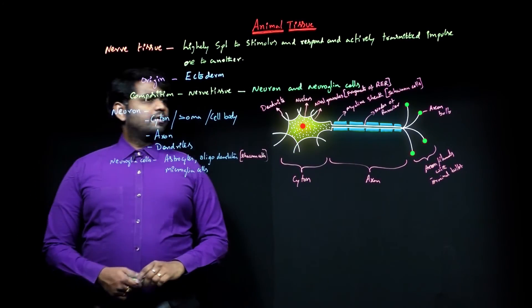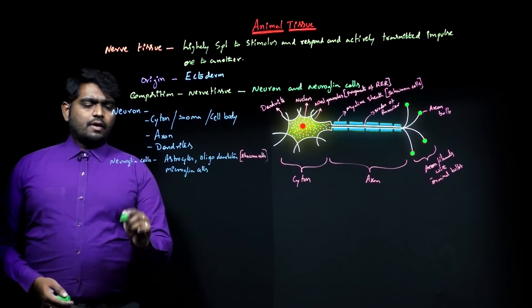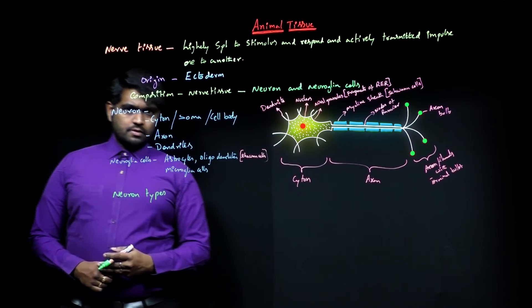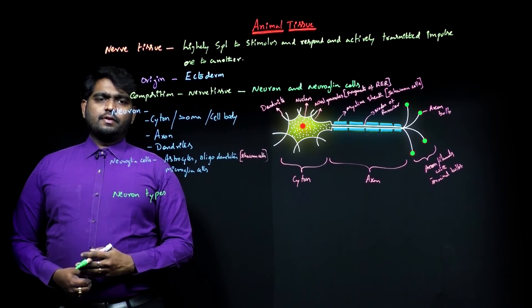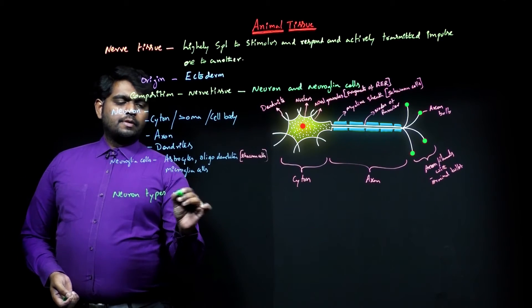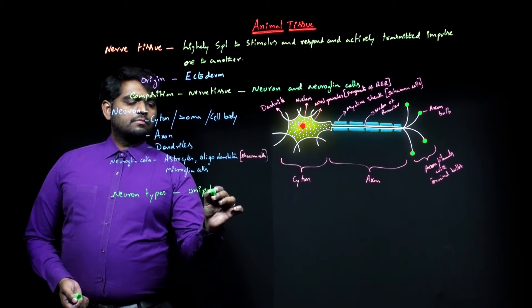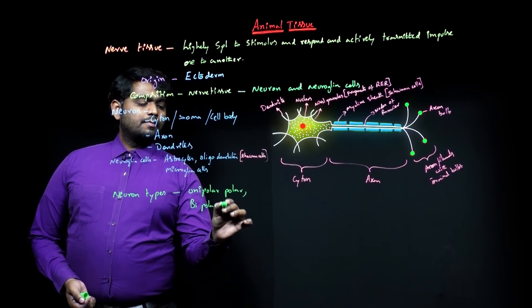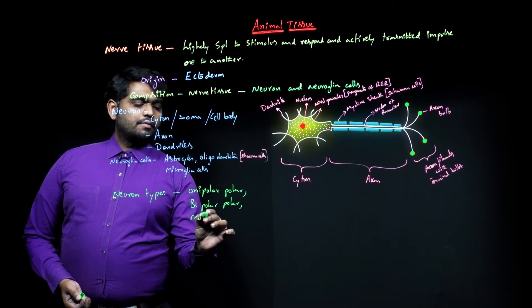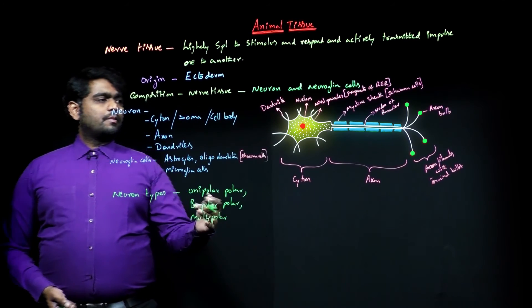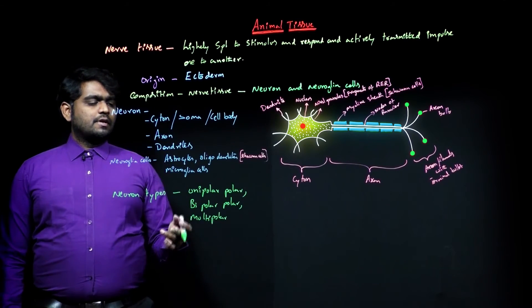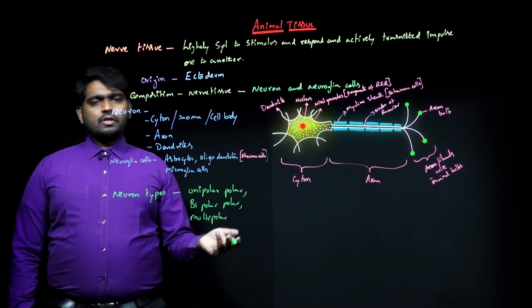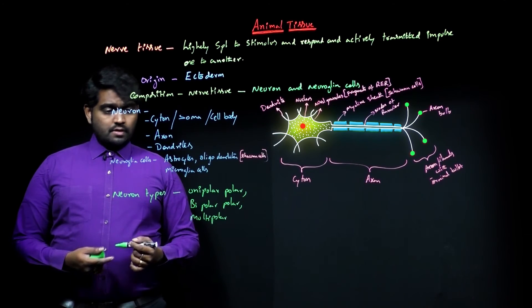This is the complete neuron diagram. Neuron types now. Based on neurons, there are three types: unipolar, bipolar, and multipolar. Unipolar means a single axon and dendrite will be present. Bipolar means the axon and dendrite will be present. Multipolar means more than one dendrite is present with axon.